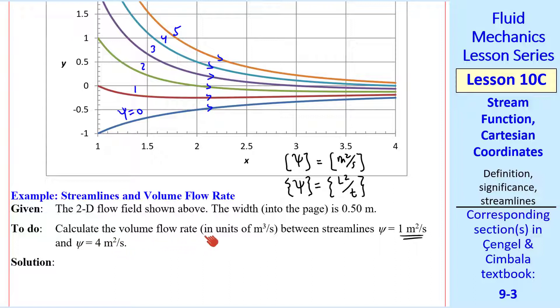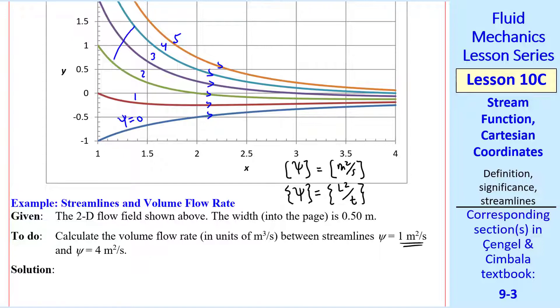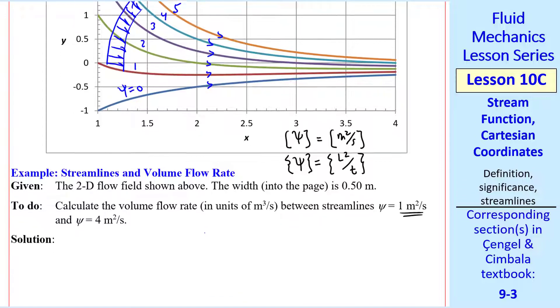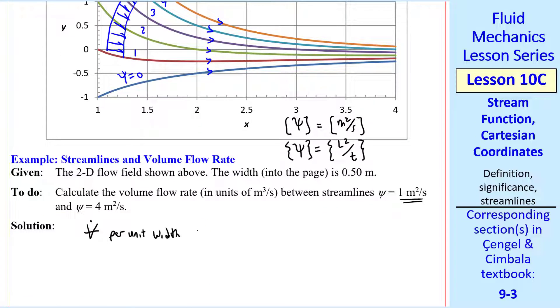So let's calculate the volume flow rate in units of meter cubed per second between streamlines psi equal 1 and psi equal 4 meter squared per second. Well we'll have some velocity profile between these two streamlines and the volume flow rate per unit depth is the difference between those two psis.